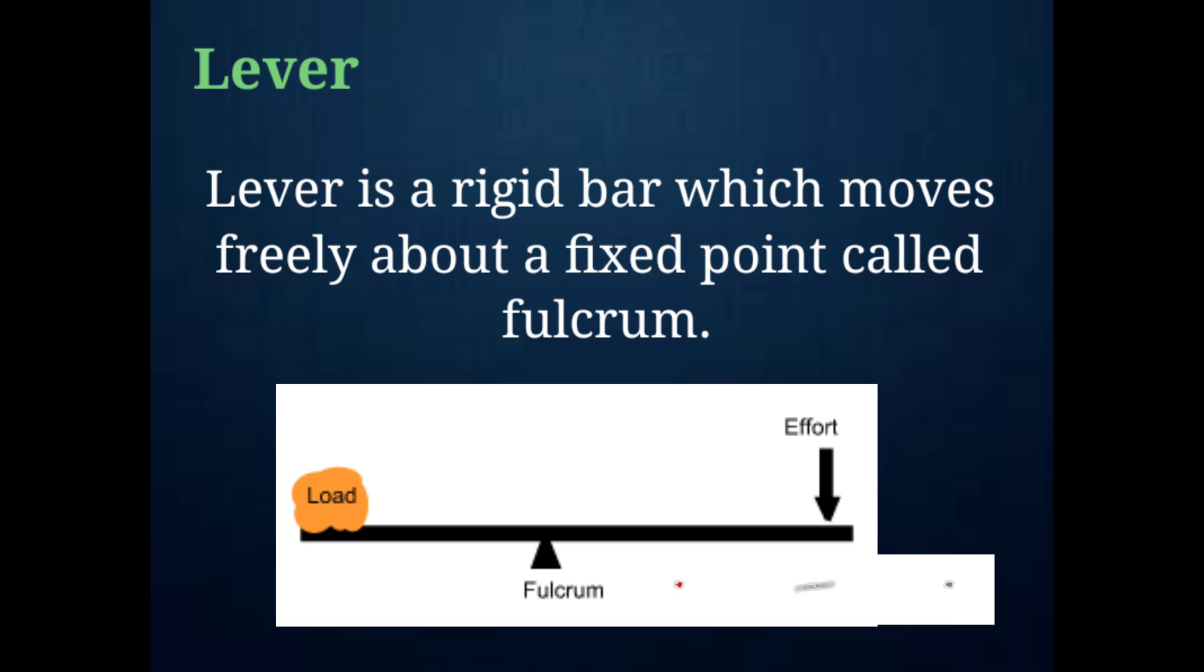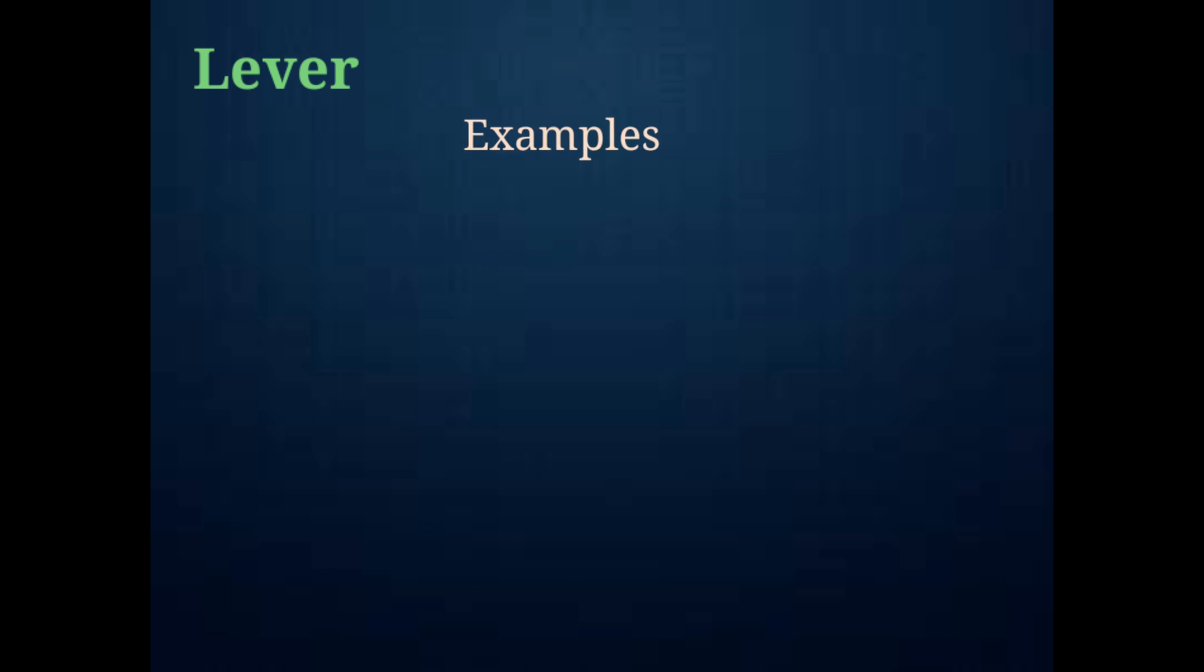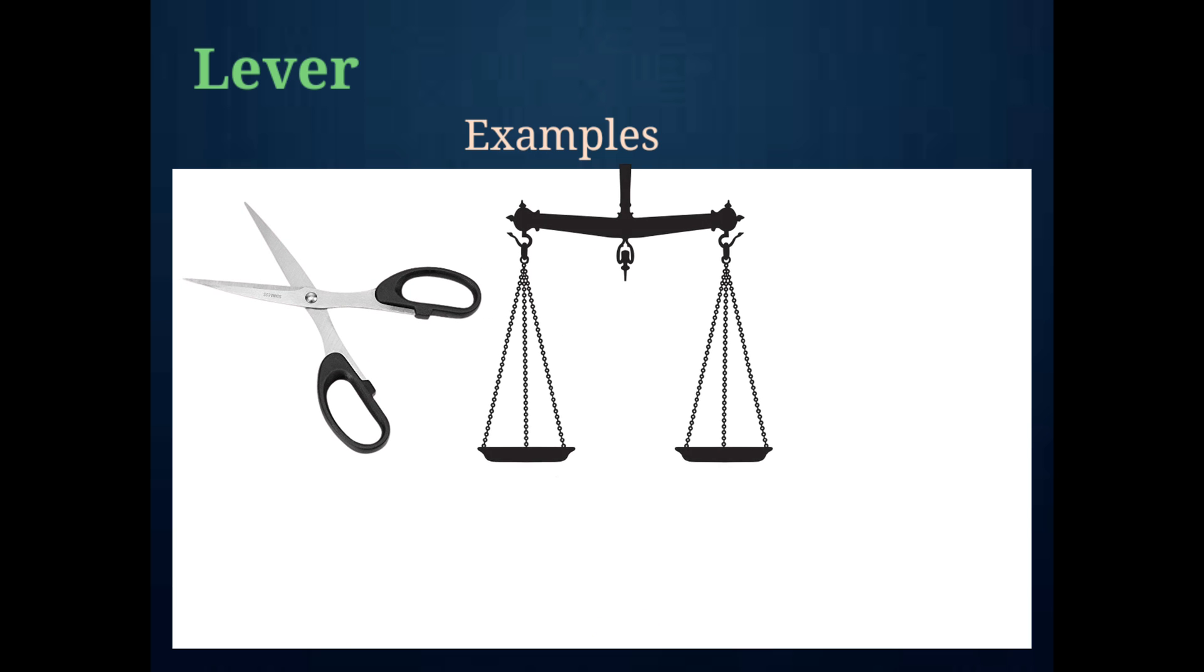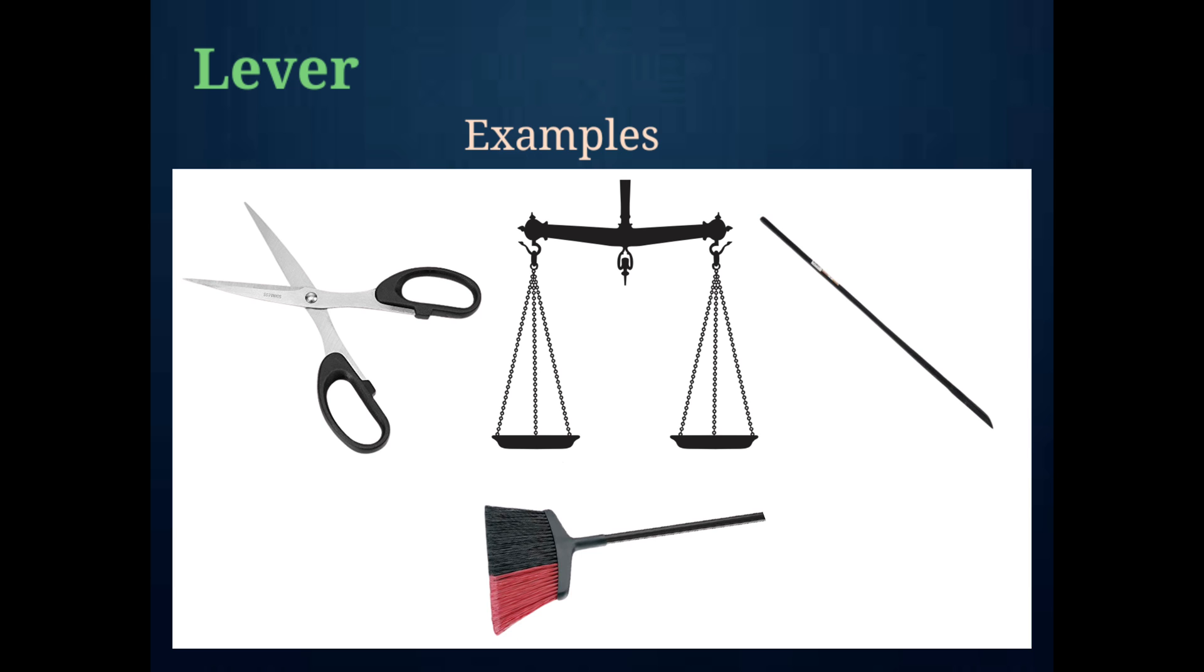Lever is a rigid bar which moves freely about a fixed point called fulcrum. It helps us by multiplying effort, changing the direction of force, and increasing the rate of doing work. Some examples of lever are seesaw, beam balance, crowbar, broom, etc.